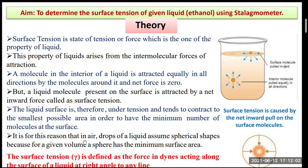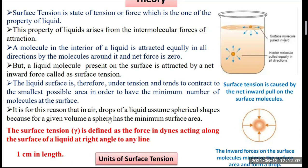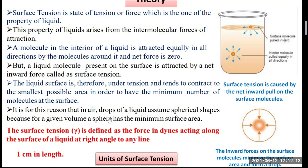Surface tension is denoted by gamma. Surface tension gamma is defined as the force in dynes acting along the surface of a liquid at right angles to any line of one centimeter in length. The units of surface tension are dynes per centimeter or Newton per meter.